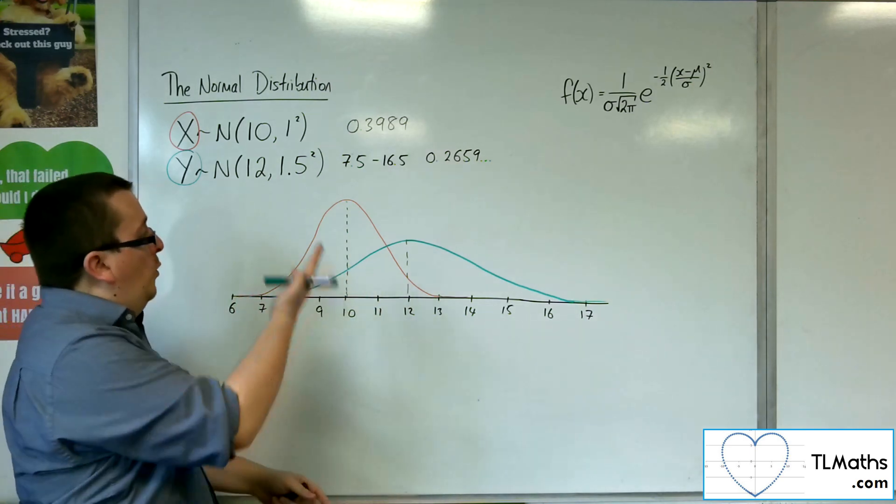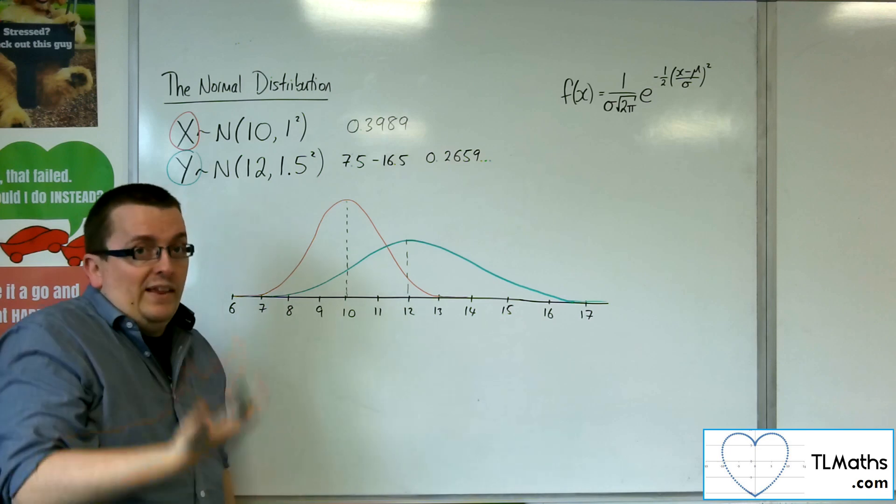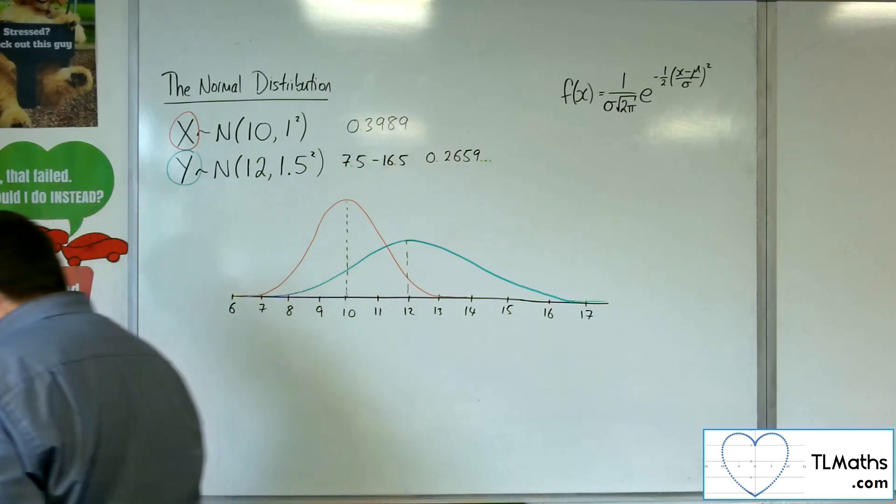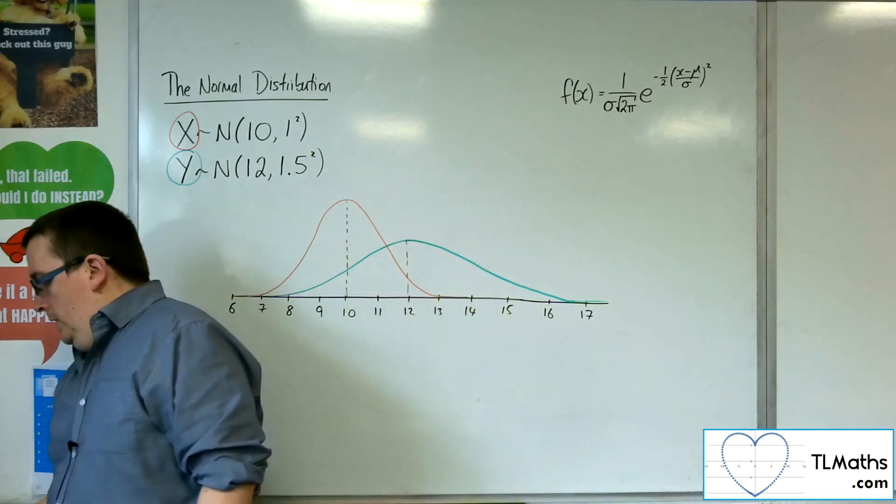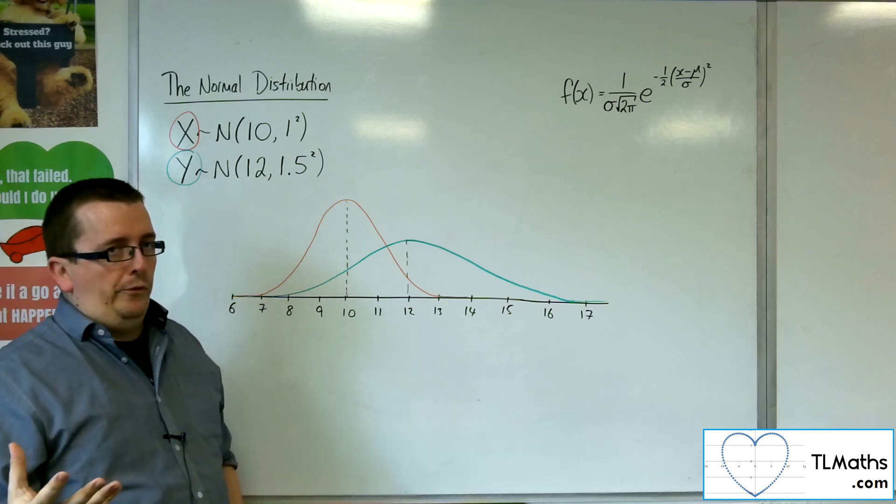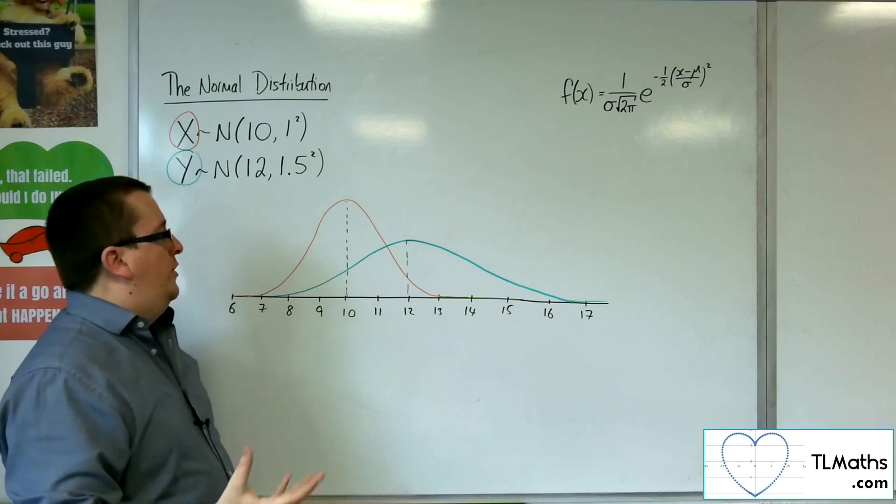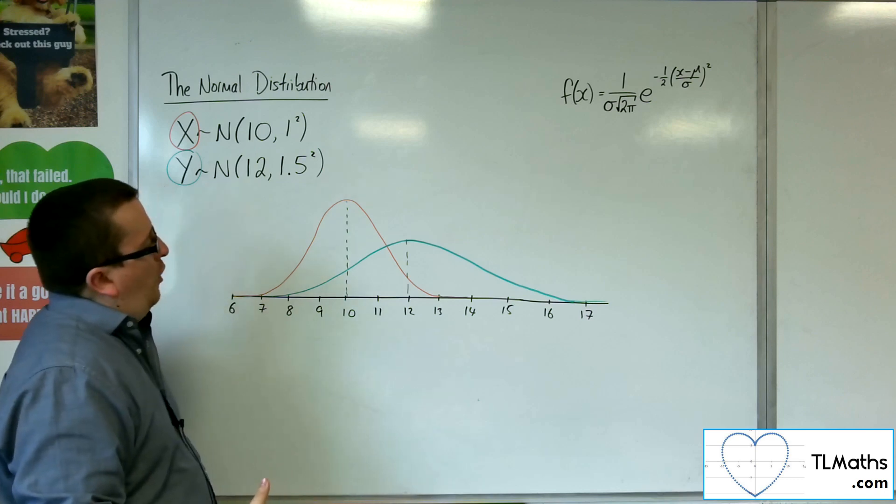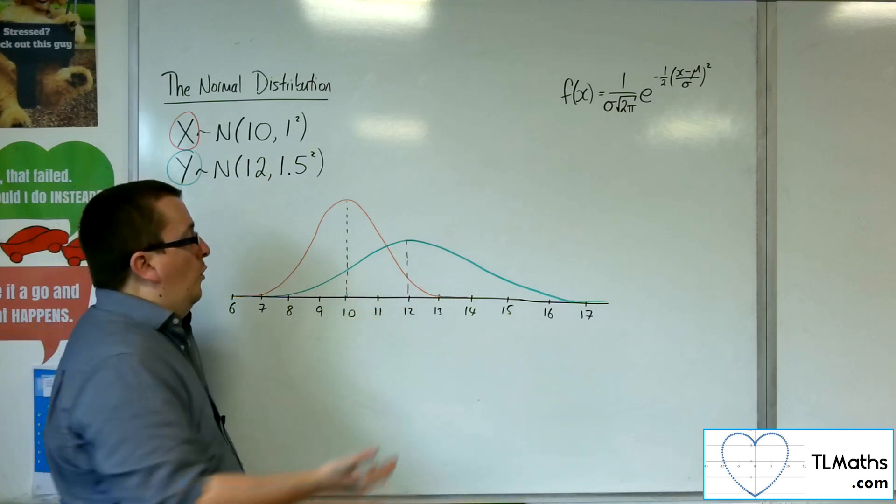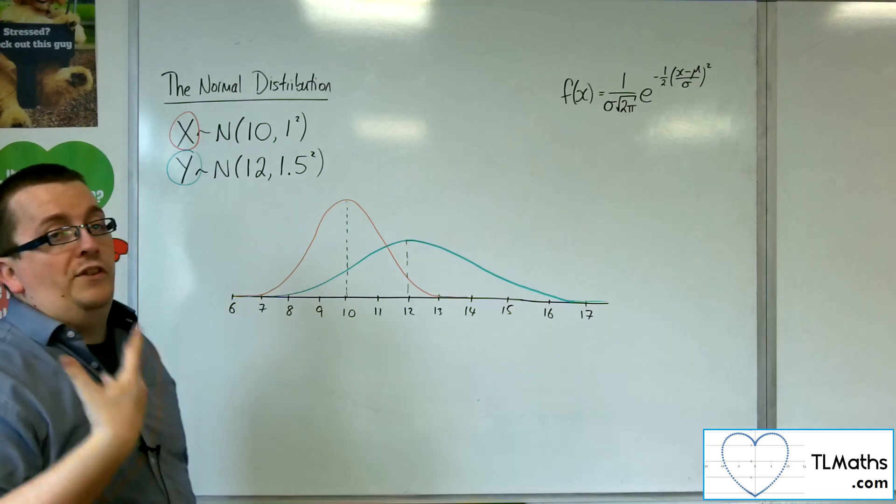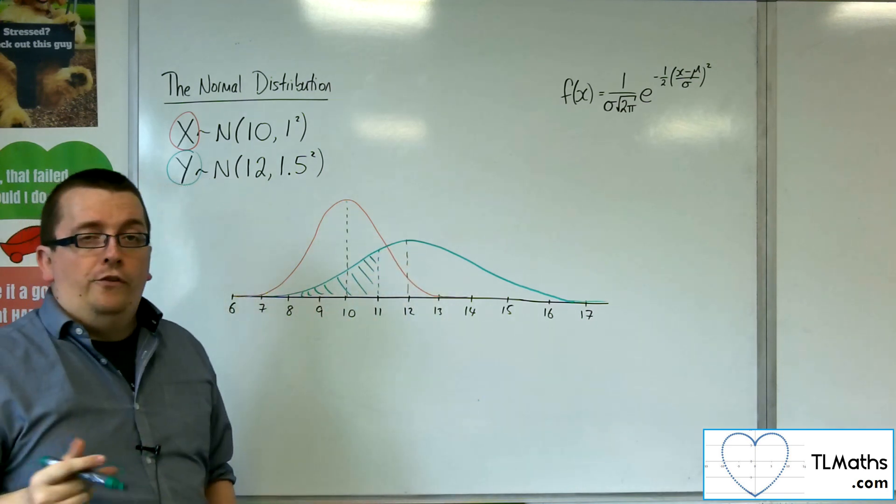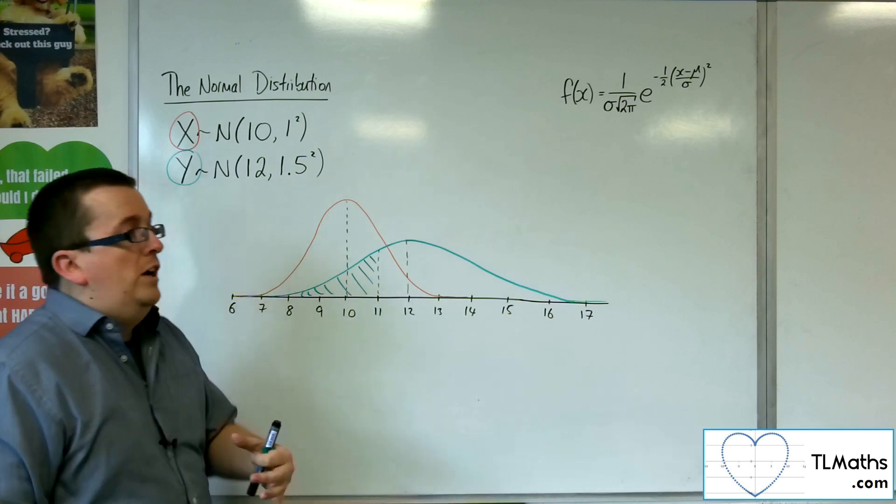So what can we do with these? Our main job with normal distribution curves and normal distribution problems is to find probabilities in certain ranges. To find the probability, for example, of this curve, what is the probability of selecting a tree at random that is taller than 10.5 metres? Or for this curve, what's the probability of selecting a tree that is less than 11 metres? Our job therefore would be to find out particular areas of the curve. Because the probability is given by the area of the curve, we need to calculate those areas.